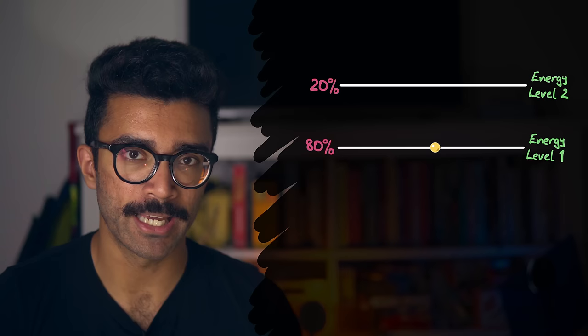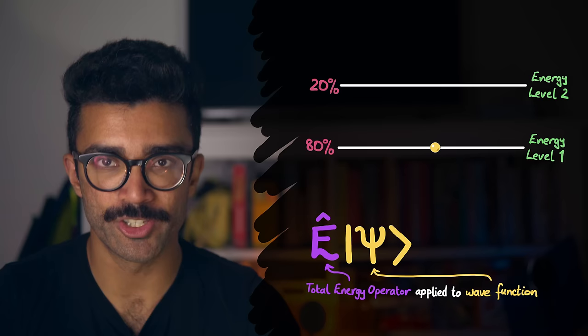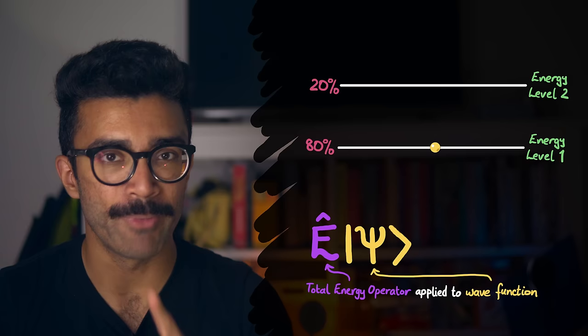And in the theory of quantum mechanics, the way that we do that, the way that we find out how much energy our electron has, is by applying a measurement operator on our wave function. In this case, of course, we're looking at the total energy operator.